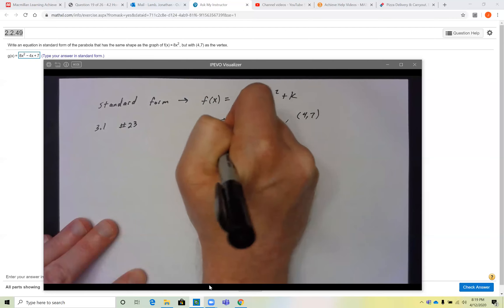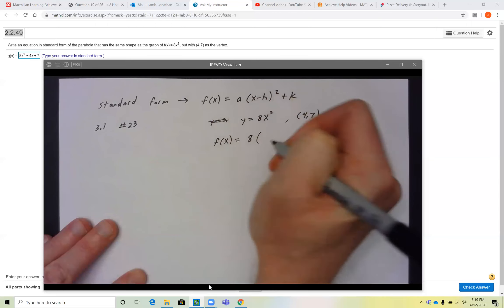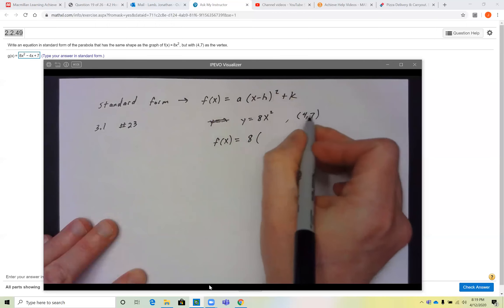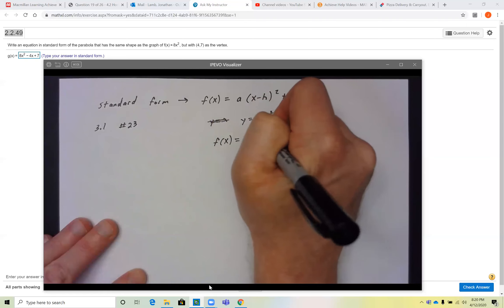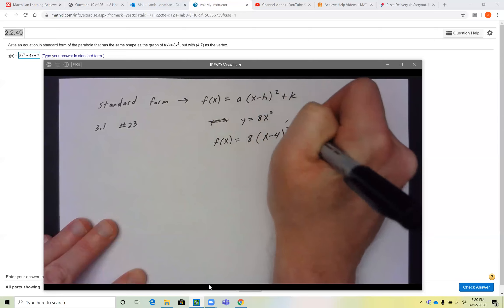So we know f(x) in this case should be 8 times the group. You're going to shift it to the right four units, so that's (x - 4) quantity squared, and then up 7 plus 7.